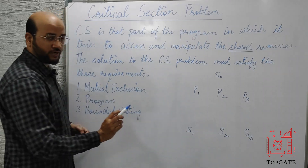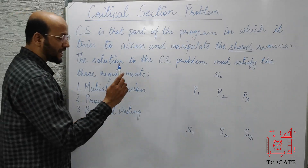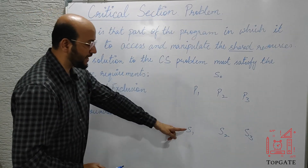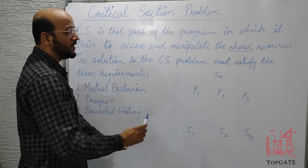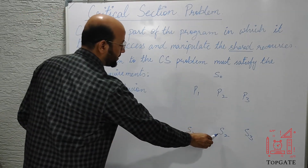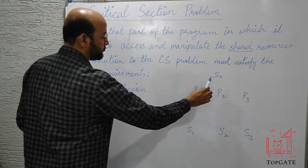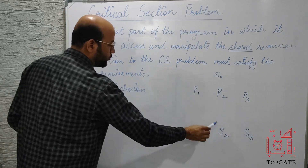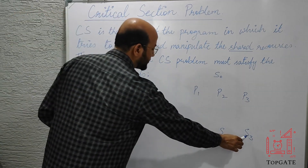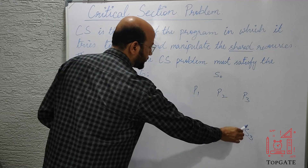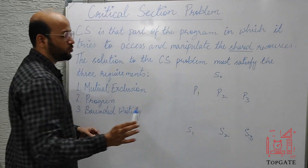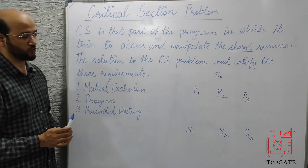S1 is a private resource of P1, so only P1 can use S1 — P2 and P3 cannot. S2 is a private resource of P2, meaning P2 can use S2 but not P1 or P3. Similarly, S3 is a private resource of P3, and P1 and P2 cannot use that resource.